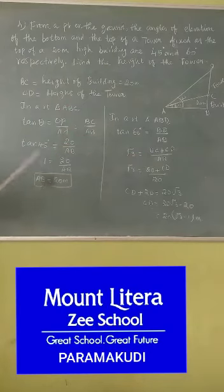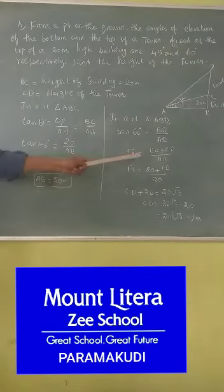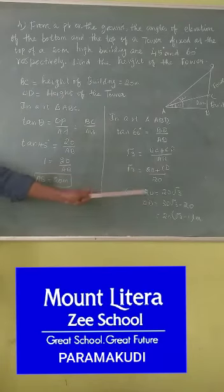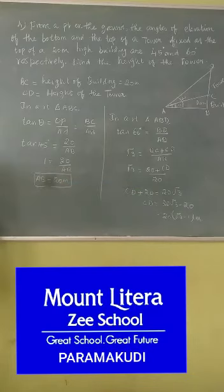Just substitute. We have AB value as well as BC value. Substitute this formula. We have root 3 is equal to 20 plus CD by 20. This division comes as multiplication. So you have CD plus 20 is equal to 20 into root 3.